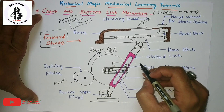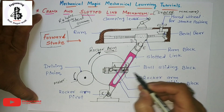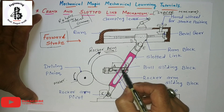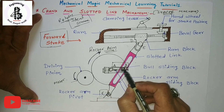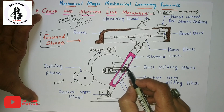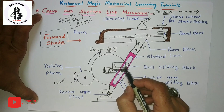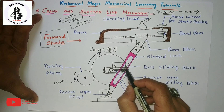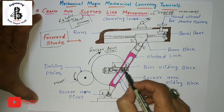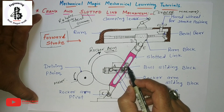The sliding block — which is also known as a rocker arm sliding block — is kept in the slotted link. The sliding block is connected by the crank pin, which is at the end of point B, that being the crank A to B.